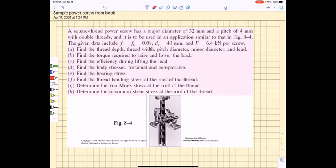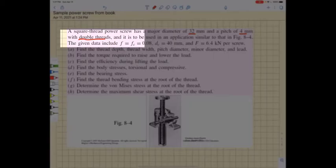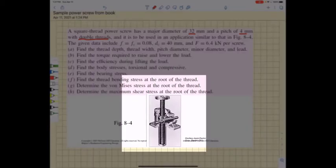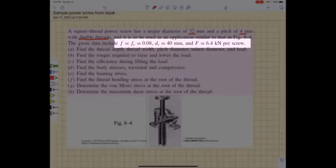We started this problem the other day with a power screw with a major diameter of 32 millimeters, a pitch of 4 millimeters, and with double threads. It's to be used as shown in figure 8-4 below. It has both thread and collar friction equal to 0.08, the collar diameter is 40 millimeters, and the force that it's required to raise is 6.4 kilonewtons.